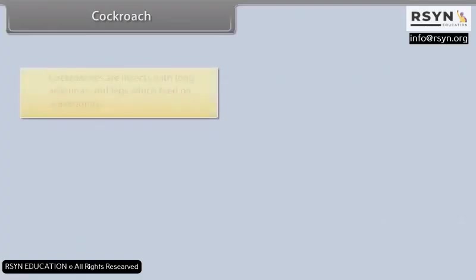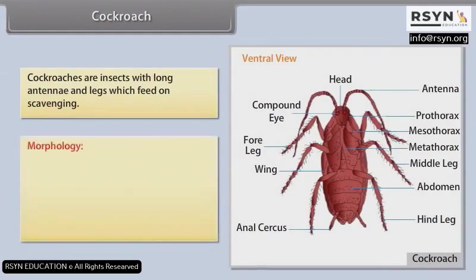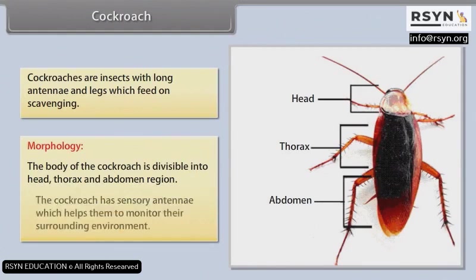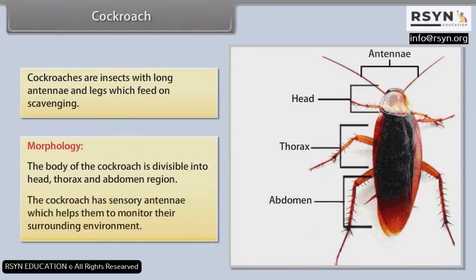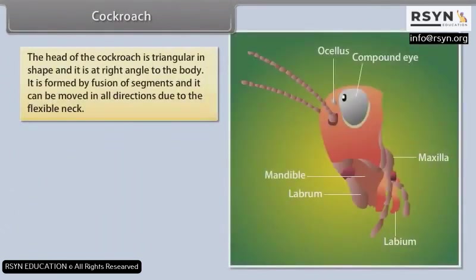Cockroach. Cockroaches are insects with long antennae and legs which feed by scavenging. The body of the cockroach is divisible into head, thorax and abdomen. The cockroach has sensory antennae which help them monitor their surrounding environment. The head of the cockroach is triangular in shape, at right angles to the body, formed by fusion of segments, and can be moved in all directions due to the flexible neck.